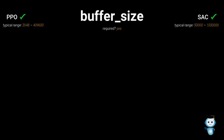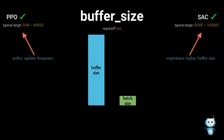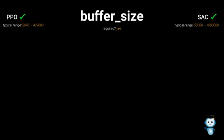Next one is buffer size, which is another parameter related to experiences. It is important to know that this parameter is fundamentally different between PPO and SAC. For PPO, this parameter specifies after how many collected experiences a policy model update occurs. With SAC, however, the parameter defines the size of the experience replay buffer and not the update frequency, which for SAC is specified in a parameter named steps per update — more about that later. This value should be multiple times larger than the batch size. If training is unstable, consider increasing this value within the recommended range to improve stability at the cost of slower learning.